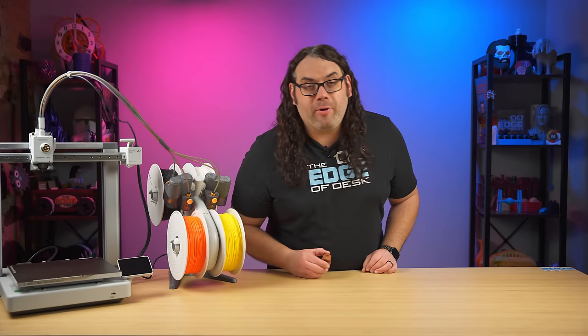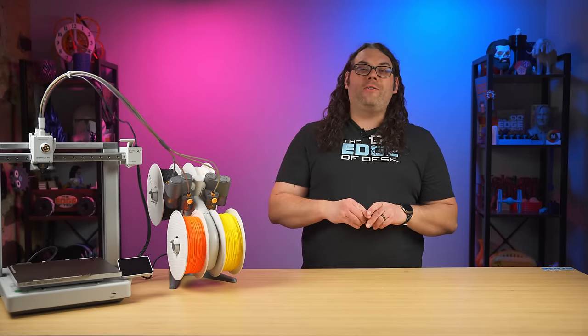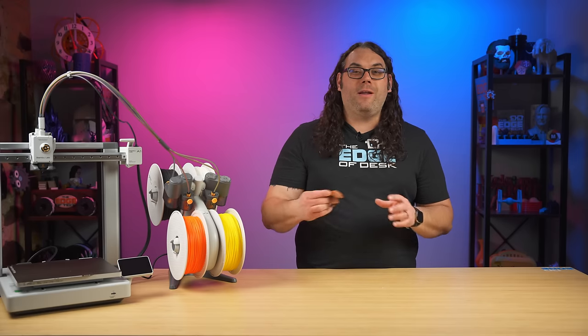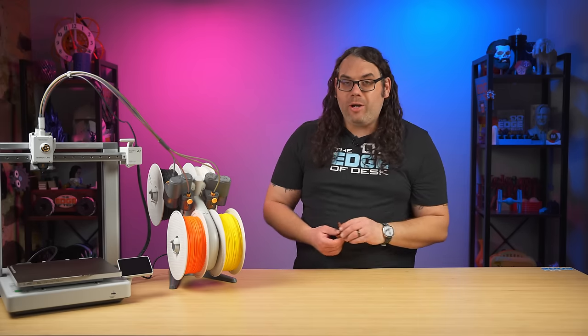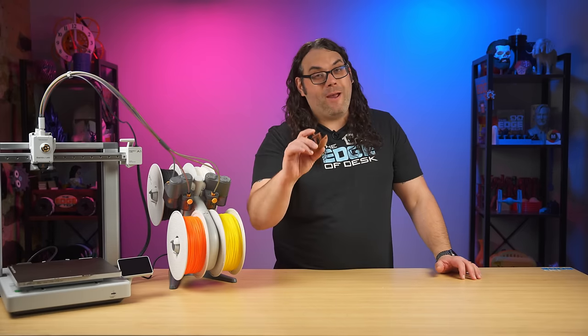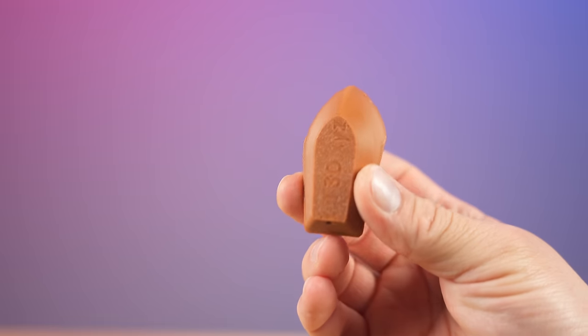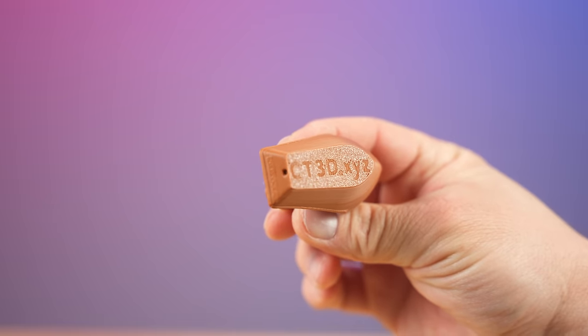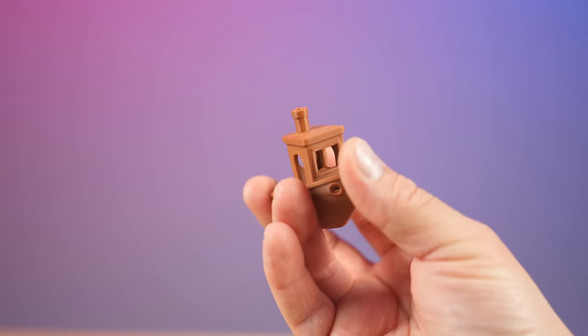The first thing that I print on all of my Bamboo Lab printers is a Benchy. This Benchy had a print time of just about 14 minutes total, not including the calibration, which is a pretty fast Benchy. Considering that I'm used to seeing one and a half to two hour Benchy's that don't come out near as good as this, I'll definitely take 14 minutes on this one.